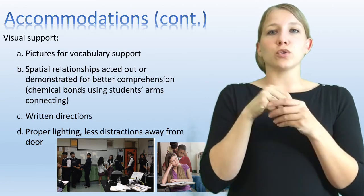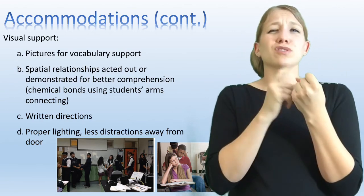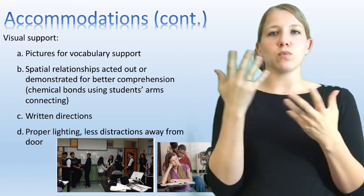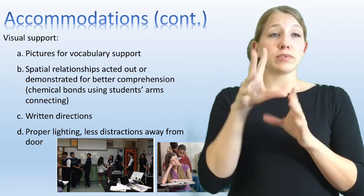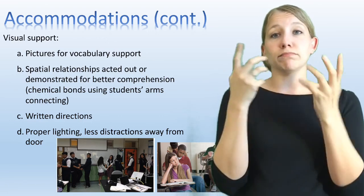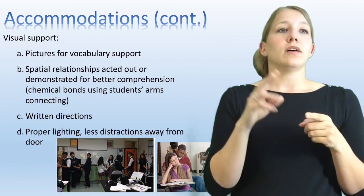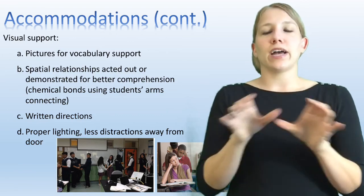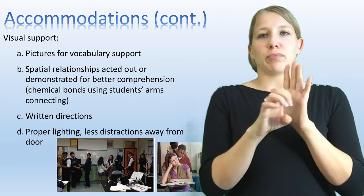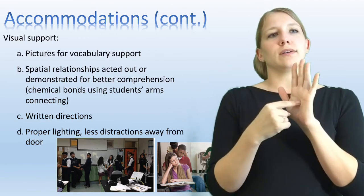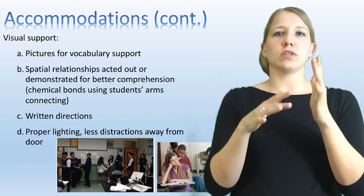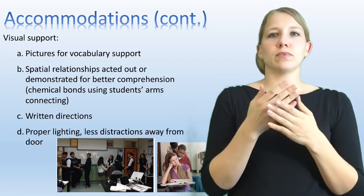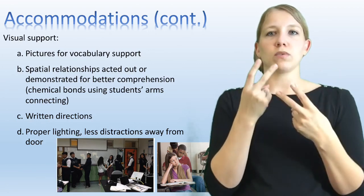Other accommodations include visual supports, which are really important to help the deaf or hard of hearing student completely understand what they're supposed to be doing in class. Examples include pictures that match vocabulary and spatial relationships that are acted out in a physical manner. For example, one picture shows chemical bonds with students holding each other's arms — that's a good physical way to help the student understand visually what's happening.